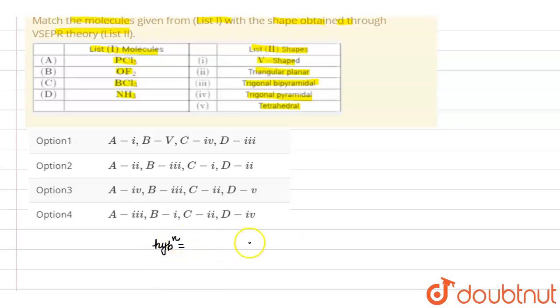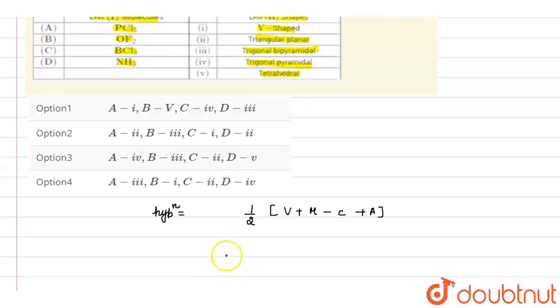And to find out the hybridization, there is a formula called half of V plus M minus C plus A, where V signifies the number of valence electrons.